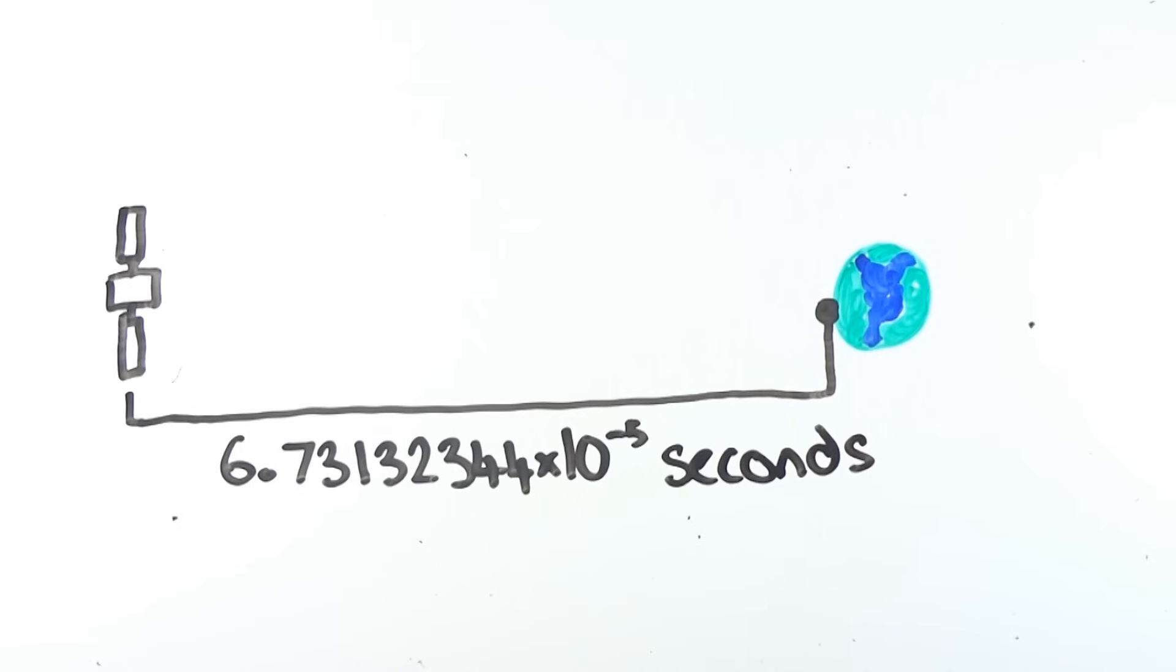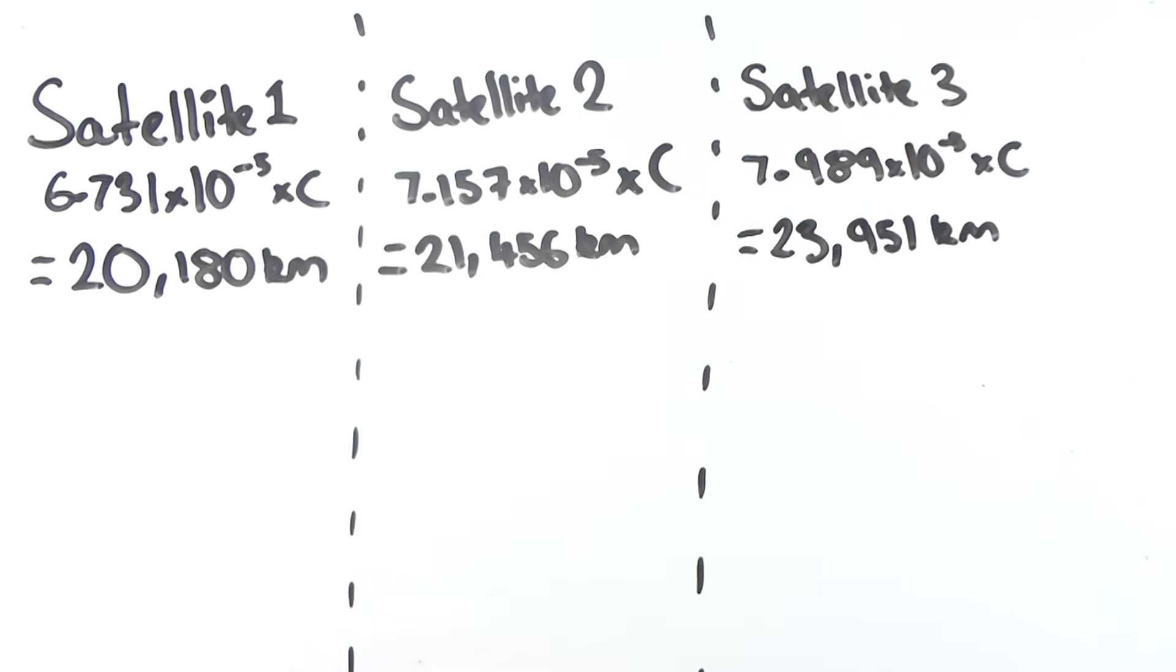With these satellites all sending exceptionally accurate time down to Earth, your phone or GPS receiver can compare the difference of time between when the signal was sent to when it was received to work out the distance between you and the satellite. By multiplying this time difference with the speed of light, you can begin to get the distance away you are from that satellite.